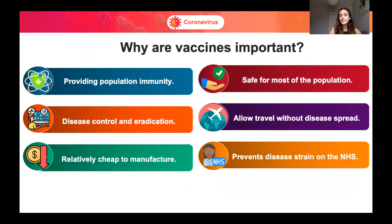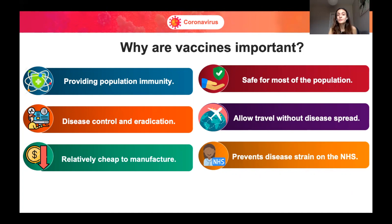You might wonder why vaccines are important and why they are such a hot topic nowadays. They do provide population immunity, they help with disease control and disease eradication, they are relatively cheap to manufacture, safe for most of the population, they allow travel without disease spread, and they prevent disease strain on the NHS. What more efficient way to save people and help fight the NHS backlog than getting vaccinated?